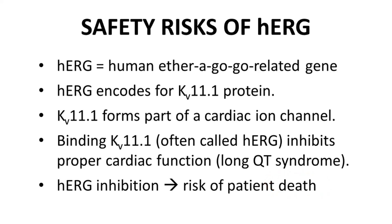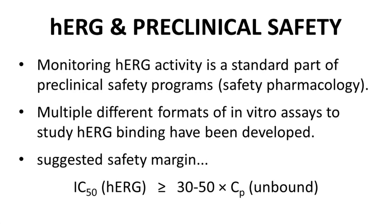Terfenadine built up in the plasma because of reduced metabolism and inhibited HERG ion channel activity. Because of these safety risks, drug discovery teams have become more aware of potential HERG inhibition. Monitoring HERG binding has now become a standard part of every new drug program and falls under the umbrella of safety pharmacology. There are multiple in vitro assays that can detect and quantify HERG channel inhibition or binding. There is no strict cutoff, but many programs strive for advanced compounds to have an IC50 on HERG that is greater than or equal to 30 to 50 times the therapeutic unbound plasma concentration.